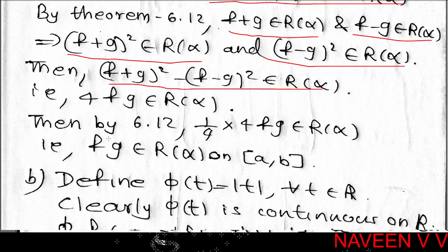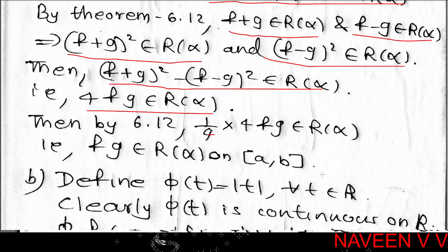Now (f+g)² - (f-g)² = 4·f·g. Since (f+g)² and (f-g)² both belong to R(α), their difference 4·f·g belongs to R(α). Since f belongs to R(α) implies c·f belongs to R(α) for any constant c, choosing c = 1/4 gives (1/4)·(4·fg) = fg belongs to R(α). That completes the proof of the first part.